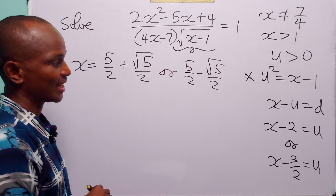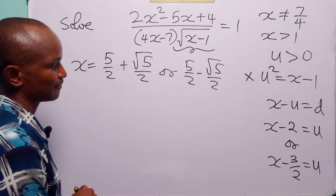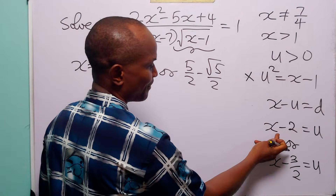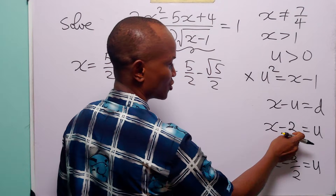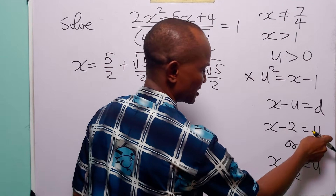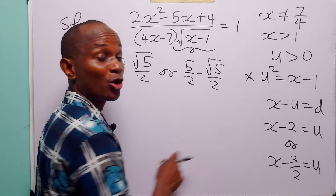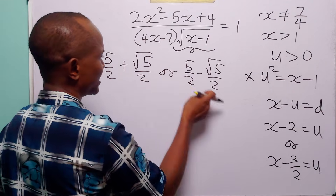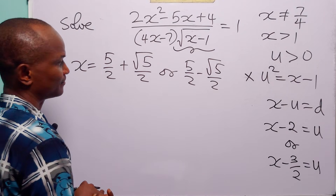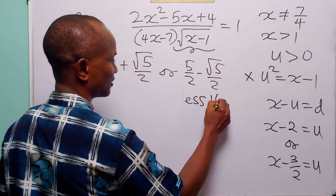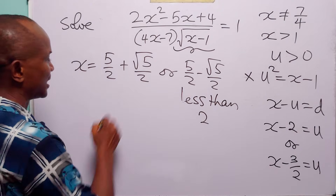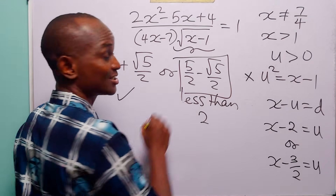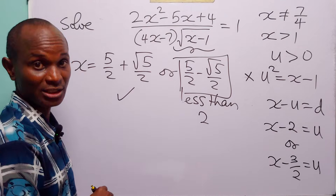We have two values of x. Since u must be positive and x minus 2 equals u, that imposes the condition that x must be greater than 2. Looking at these two values of x: 5 over 2 minus root 5 over 2 is less than 2, so only 5 over 2 plus root 5 over 2 is greater than 2. Therefore, this value of x is the only acceptable solution from this case, and x equals 5 over 2 minus root 5 over 2 is not acceptable.